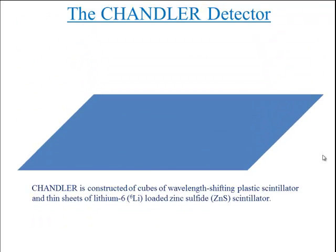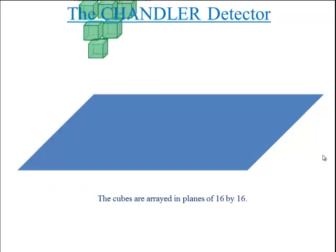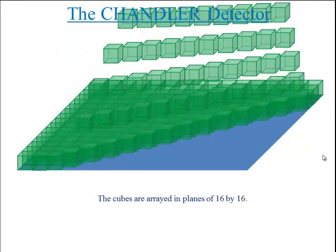In addition, there are thin sheets of lithium-6 loaded zinc sulfide scintillator. The sheets are for capturing and detecting neutrons. The cubes are arrayed in planes of 16 x 16.